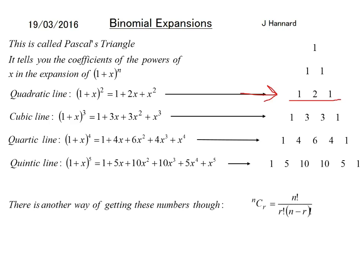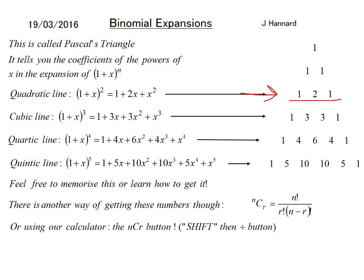There's another way of getting these numbers though, which is NCR equals N factorial over R factorial N minus R factorial. You are actually given that in the exam, but an easy way to just remember it is that. Feel free to memorize the Pascal's Triangle or learn how to get it. But I use the calculator, the NCR button, which is shift and then divide on a good Casio. If you press shift and then divide, the NCR button. So you want to type in your N first, so it could be 4C3. So it would be 4, shift, then divide, and then 3 for 4C3.